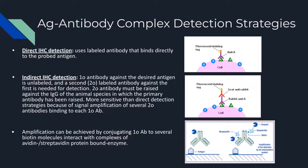Additionally, there is the indirect IHC staining method where multiple antibody types are used. The primary antibody is an unlabeled immunoglobulin that binds to the desired antigen. From there, a second labeled antibody that binds to the first is used for detection. In order for this to be possible, the secondary antibody must be raised against the immunoglobulin of the animal species in which the primary antibody was raised. Indirect IHC staining is more sensitive than direct detection strategies because of signal amplification, which occurs as a result of several secondary antibodies binding to each primary antibody.